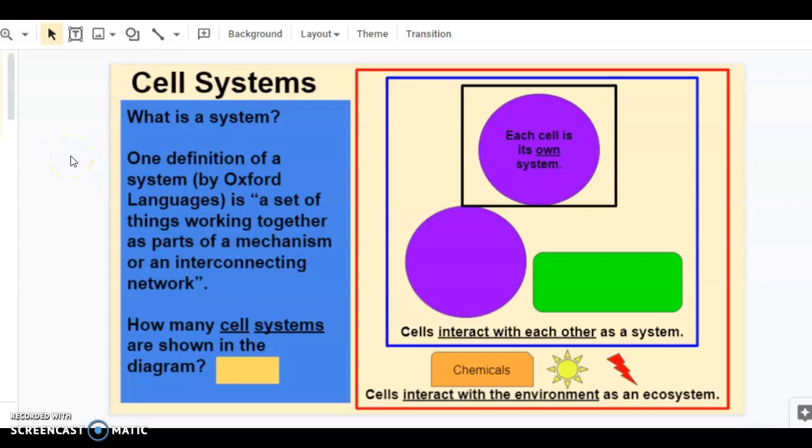Cell Systems Presentation Section 1. So, what is a system? One definition is a set of things working together as parts of a mechanism or an interconnecting network.